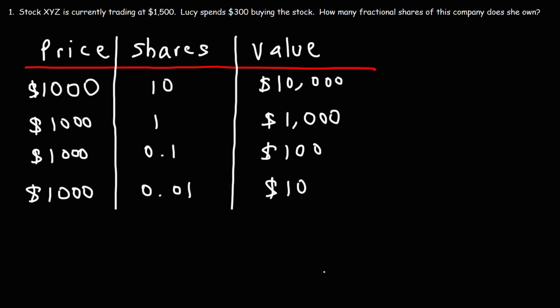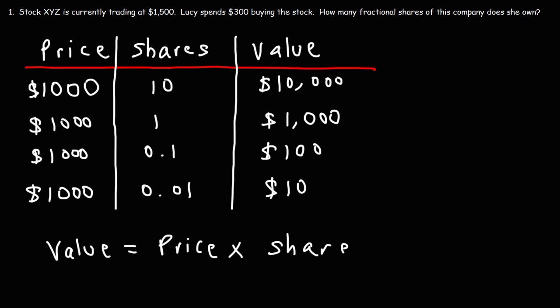Here's the formula that describes these three factors: the value of the investment is equal to the price of the stock times the number of shares that you own. It could be a whole number of shares, or it could be fractional shares.